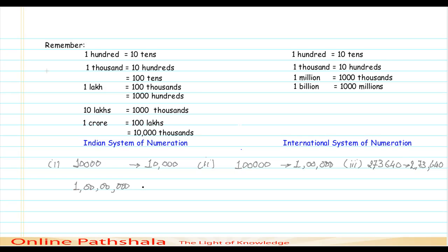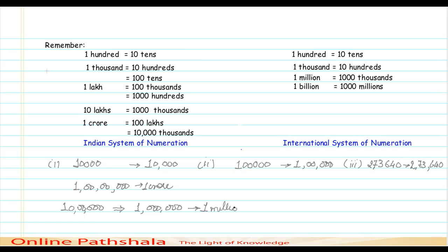In the international system of numeration, the comma is placed after every three digits. For example, ten lakhs in the Indian system — if represented in the international system with commas after every three digits — becomes one million. So ten lakhs equals one million; these are just different representations of the same number.